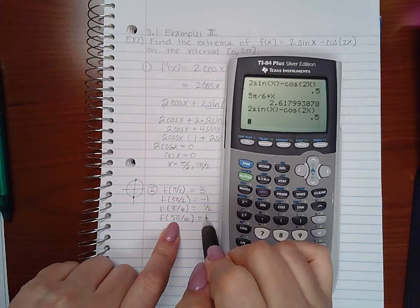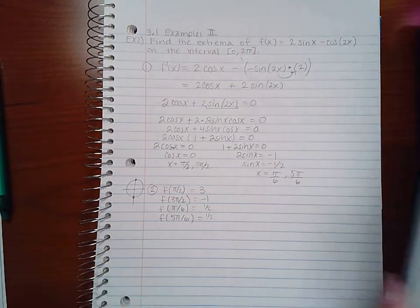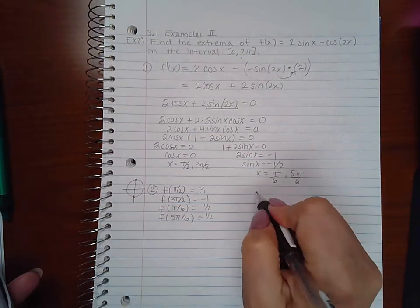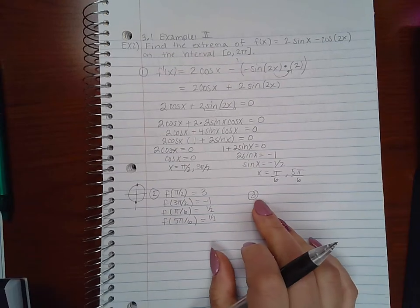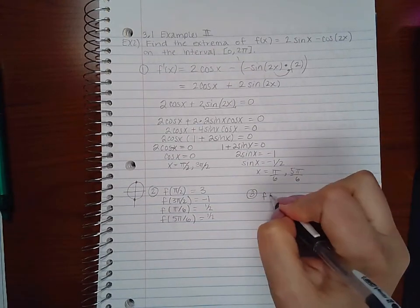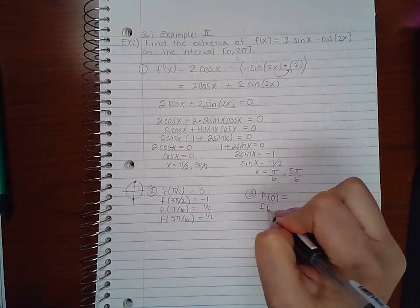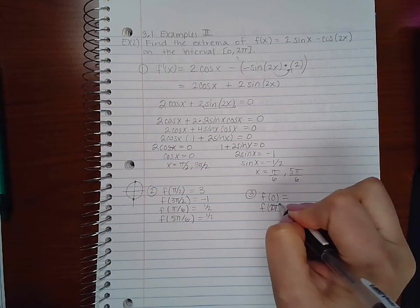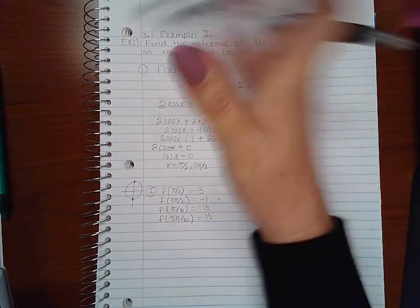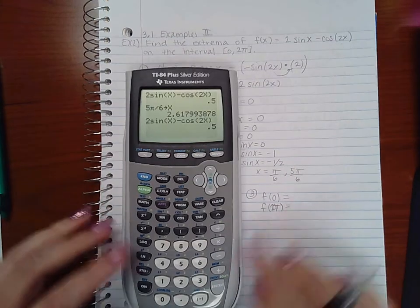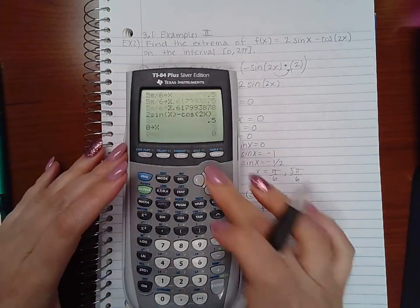Okay so we've done part two. Part three says to evaluate the function at the end points which means I need to find f(0) and f(2π) since those are my end points here. So we're going to do the same thing as before. Zero store x and plug it in I get -1.